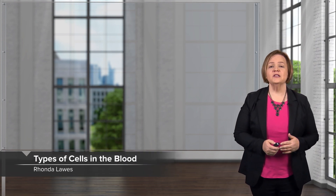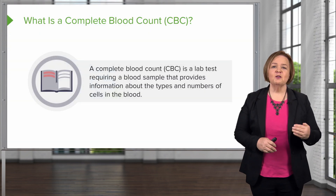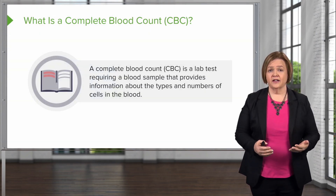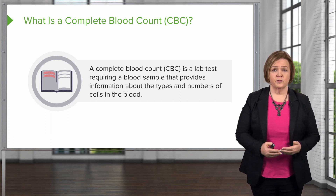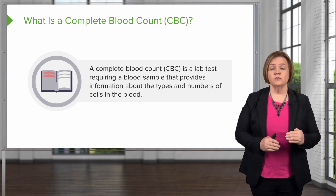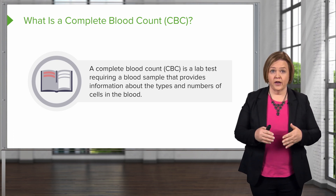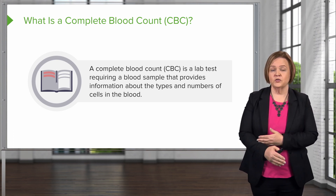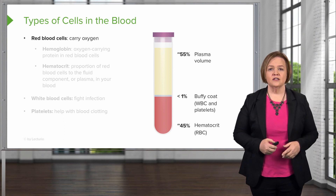Welcome to our video series on interpreting lab values. In this one, we're going to take a look at the complete blood count. We usually shorten that to CBC, so when you see a physician's order it will say CBC, because we shorten everything in healthcare. A complete blood count, or CBC, is a lab test. You'll have to get a blood sample from your patient, but it's going to give us a ton of information about the types and numbers of cells in the blood. So let's take a look at what's involved in a CBC.